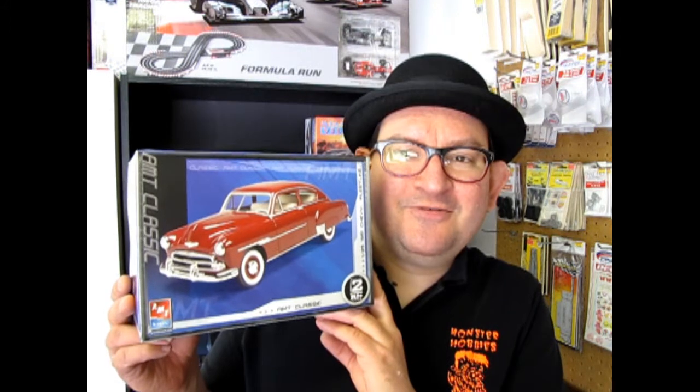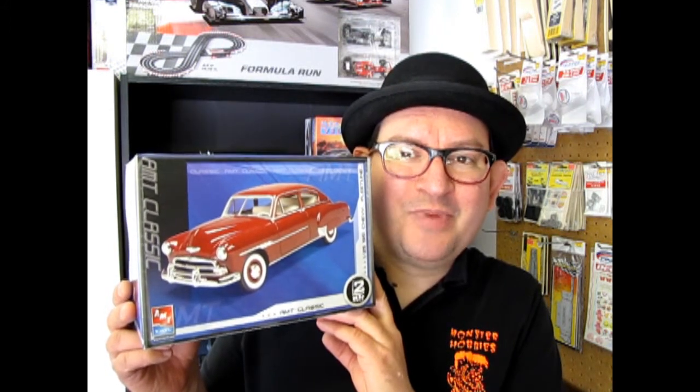And today we have a 1951 Chevy Torpedo Back Fleetline Car. Yeah, it was called the Torpedo Back because of the way the roof went to a point, as we will see in this video. So now let's go down to the bench and open the lid on this amazing model.